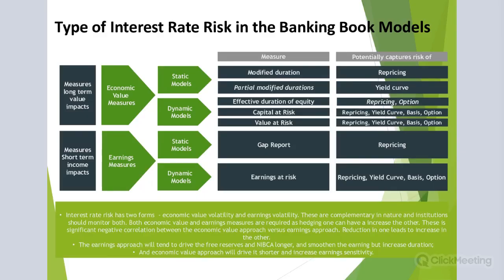Now let's talk about the metrics. We have understood that there are four different interest rate risk categories, and now we would like to discuss the metrics which measure exposure to those types of risk. There are two different measures: economic value measures, which measure long-term value impacts, including economic value of equity, duration gap, or PV01.